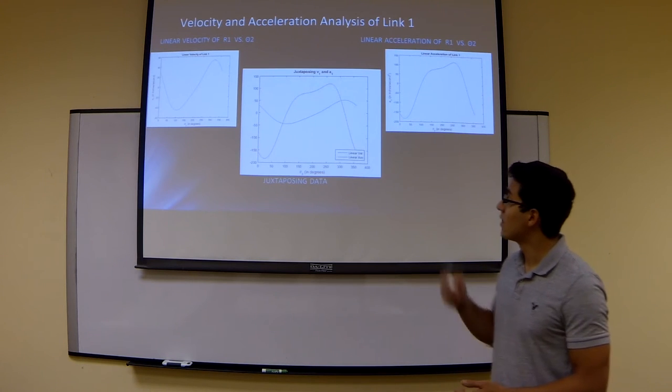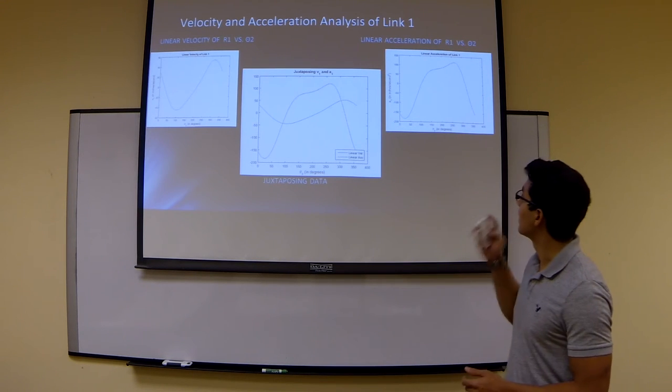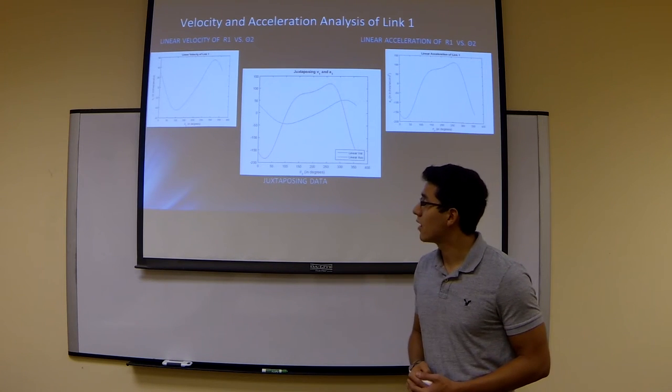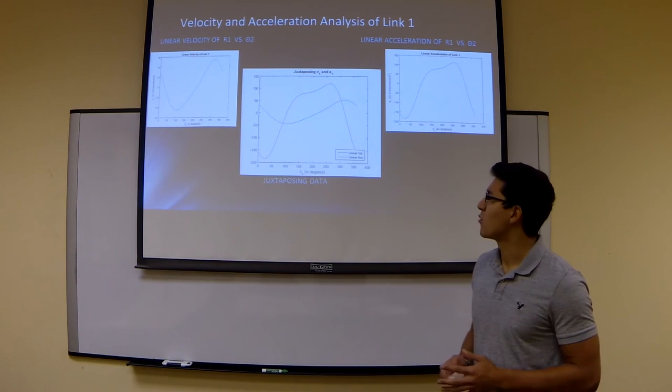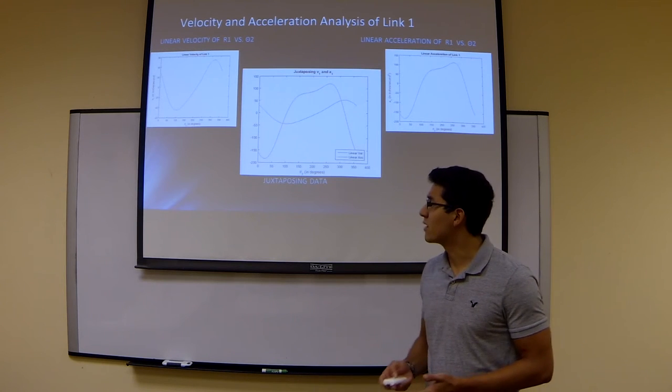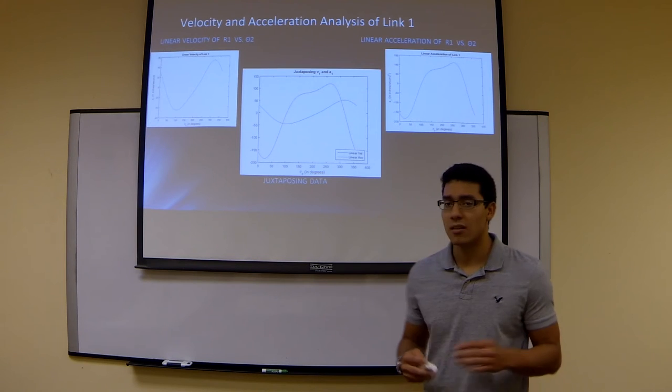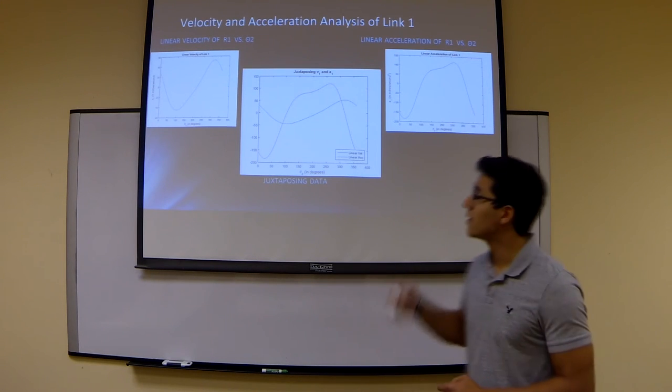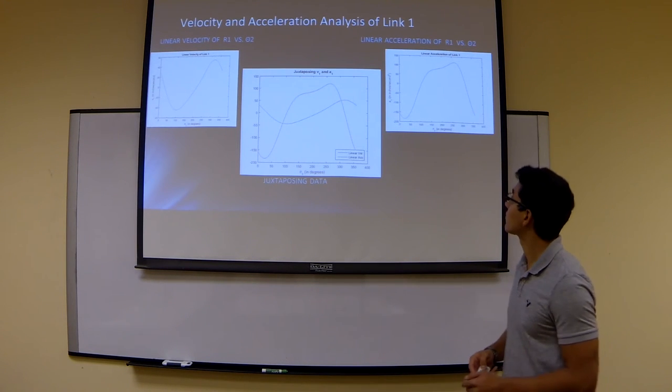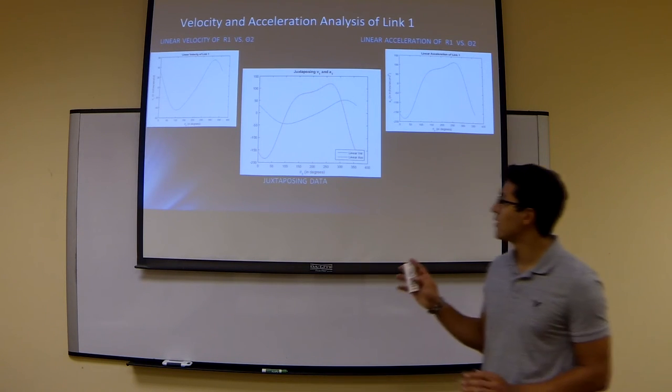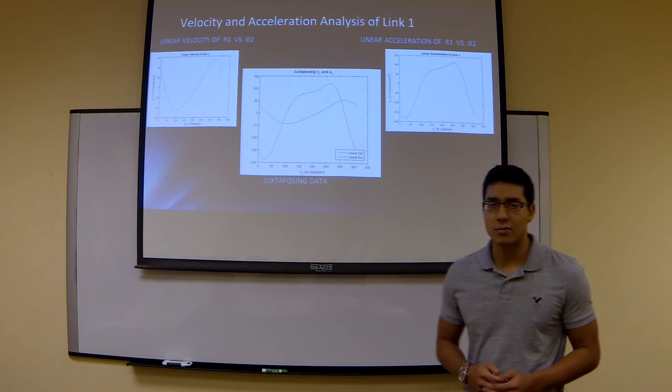Similarly, we've done the same for R1 versus theta 2 and the angular acceleration of R1 versus theta 2. On the left-hand side, we have the linear velocity, which is maximum around 100 degrees and at around 315 degrees. You can see maximum velocity of the slider itself. And linear acceleration plot on the right-hand side. Again, we have confirmed that these data points are valid.